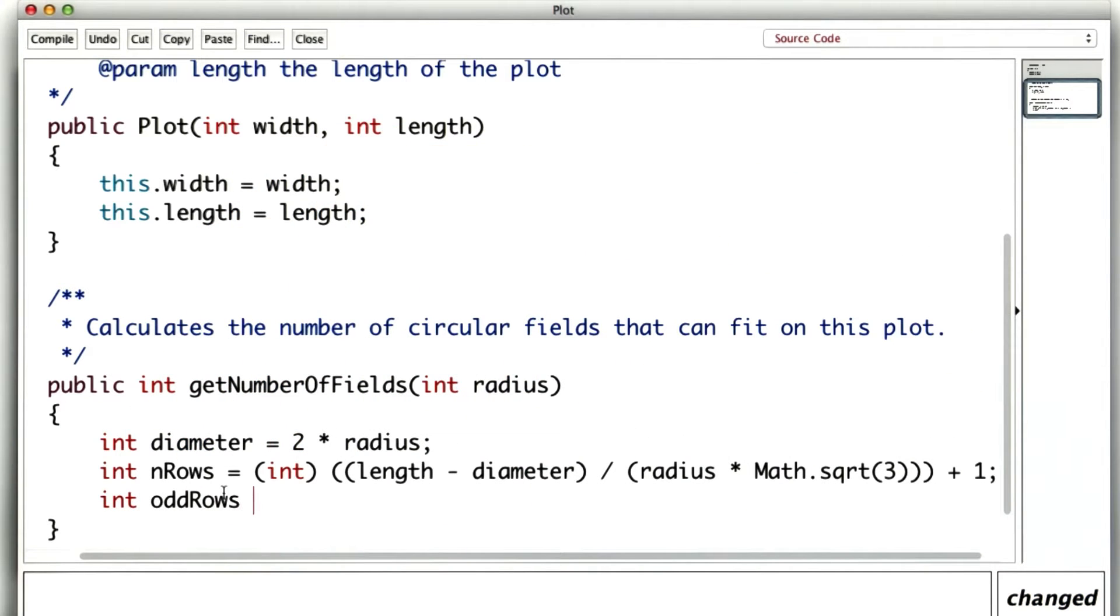After that, I calculated the number of odd rows, which was the total number of rows plus 1 divided by 2. And the number of even rows was just n rows over 2.